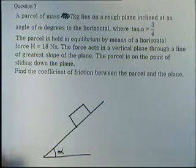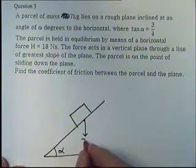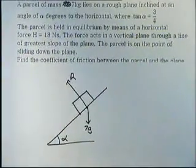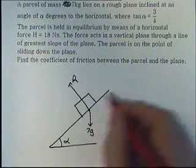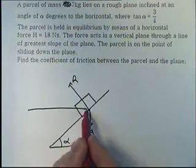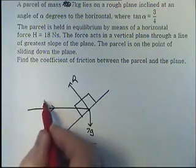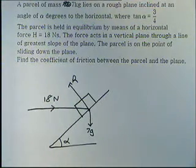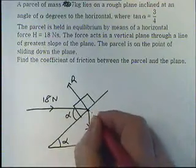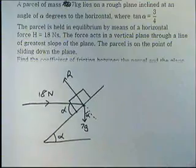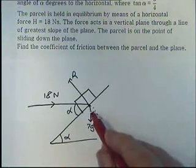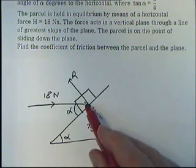We've got a plane at angle alpha to the horizontal and a parcel sitting on it. Let's put on the forces. We know there's a weight of 7g, and there's going to be a normal contact force — perpendicular to the surface, which is why it's called the normal. We also have a horizontal force of 18 newtons in this direction. From our angle work at GCSE, that angle there is alpha and that angle there is also alpha, so we can add those to the diagram. Don't make your diagrams too small — this really is the size I draw on my diagram.